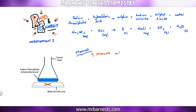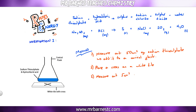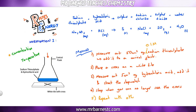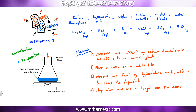For the method: measure out 50 cm³ of sodium thiosulfate and add it to a conical flask. Place a cross on a white tile, measure out 5 cm³ of hydrochloric acid, add it to the flask, and start the stopwatch. Stop when you can no longer see the cross, looking down from the top. You can investigate concentration and temperature — increase either and the cross will disappear in a shorter time.